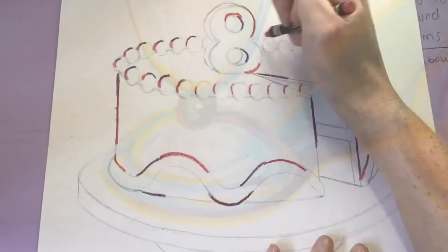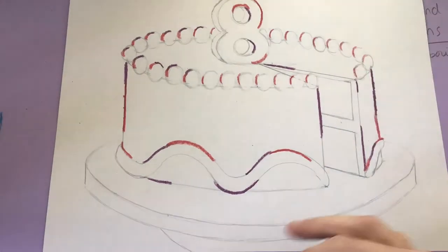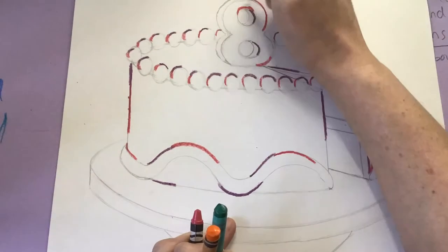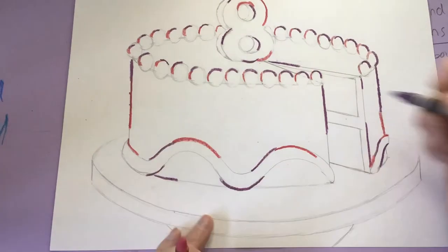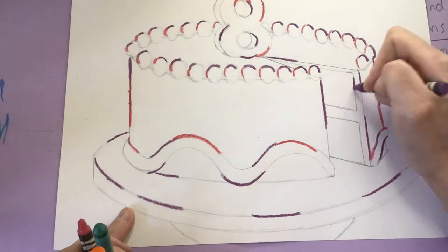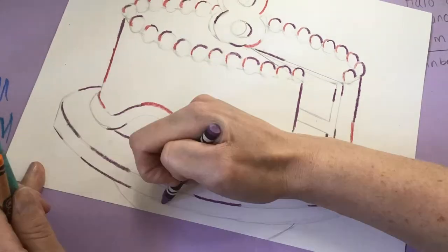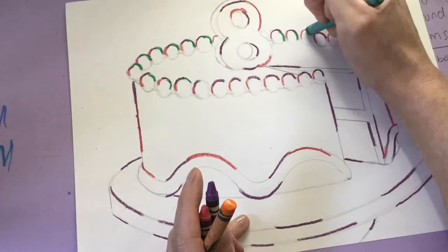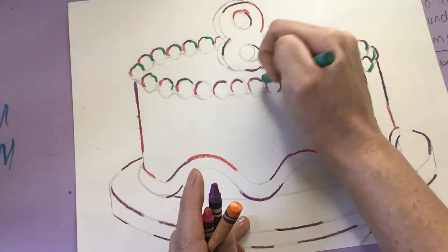So on your cake I would like you to choose four different bright colors, they can be any colors you want. I want you to outline your cake, every detail on your cake, using these four colors kind of randomly spread throughout the entire cake on every detail.